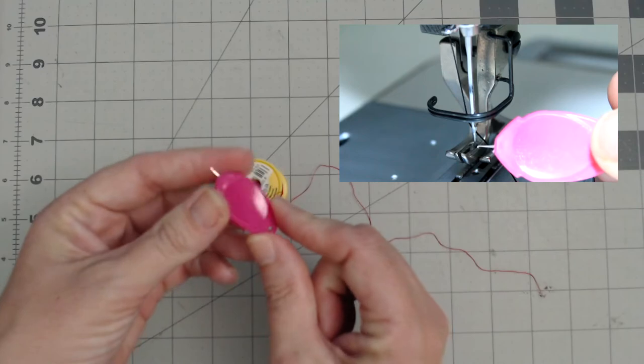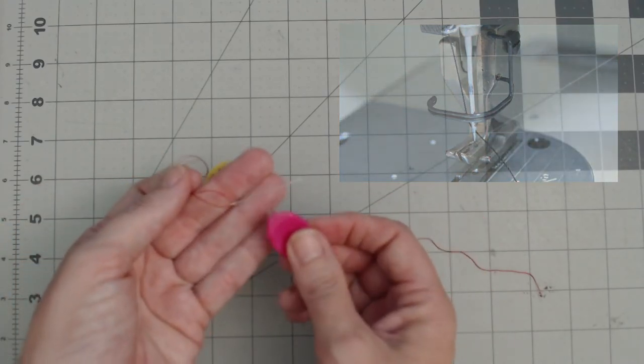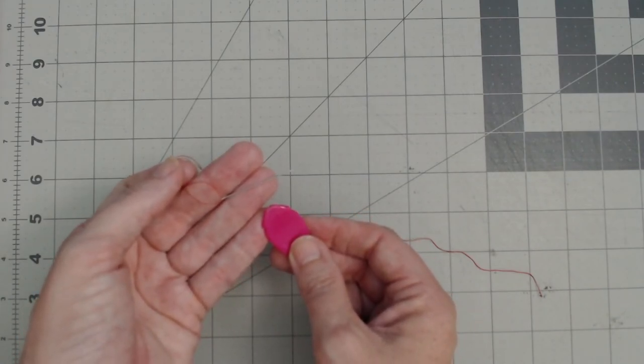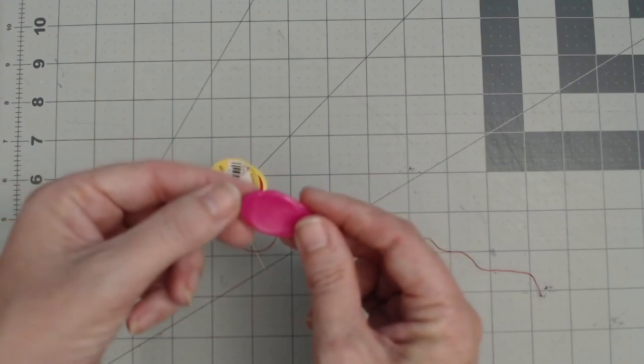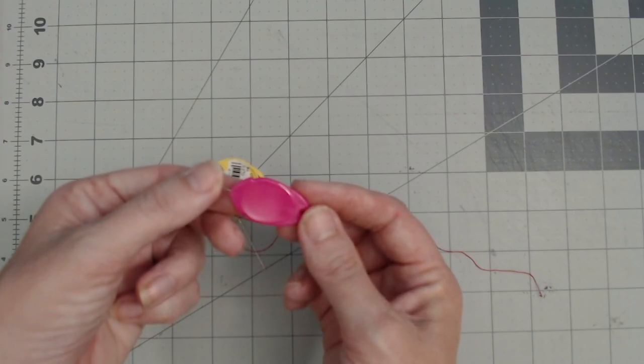Again, the only downside is that little learning curve. You really do need three hands to thread a small needle like this. But yeah, there is my review of this little needle threader. I'll put a link to where you can get them if you want in the description below.